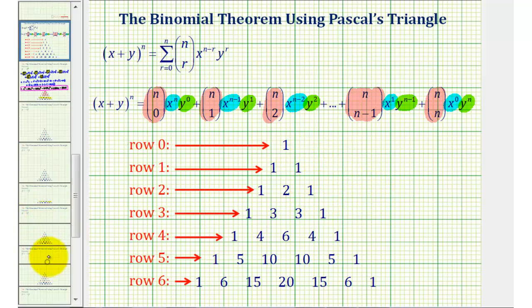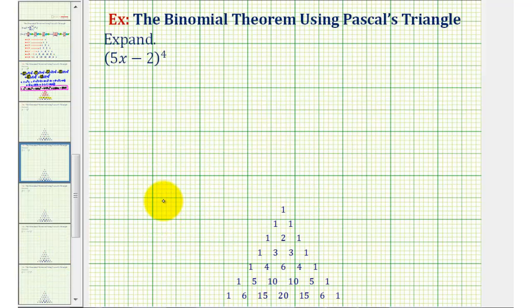So if we go back to our example, notice how our binomial is raised to the fourth power, which means our first term will have the combination 4 choose 0.